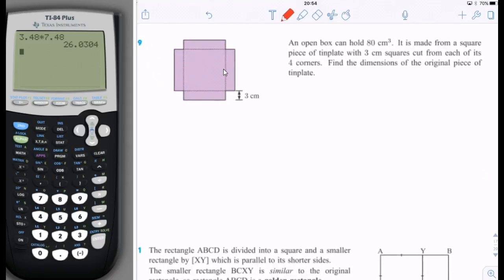An open box can hold 80 centimeters cubed. That's the volume. It is made from a square piece of tin plate with 3 centimeter squares cut from each of the four corners. Find the dimensions of the original piece of tin plate.